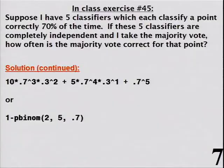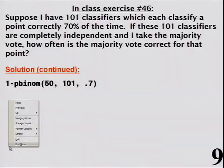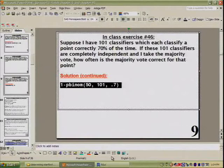This is the ideal where you have complete independence. But as long as you get them somewhat uncorrelated, you can hope to achieve this benefit. Suppose I had 101 classifiers, each completely independent and correct 70% of the time. For 101, you just need 51 or more to be correct for the majority vote to be correct. The probability, figured out using the binomial distribution, comes out to about .99999987.